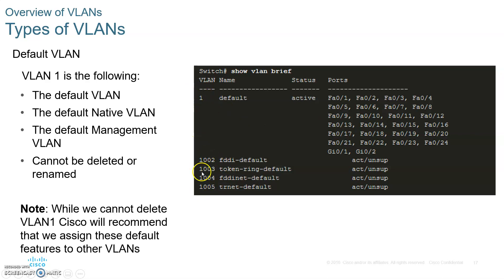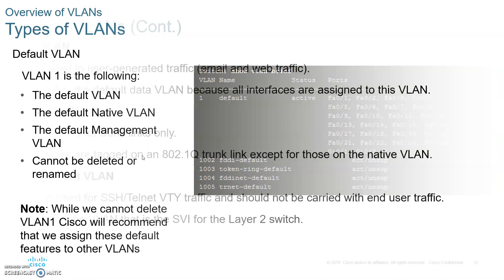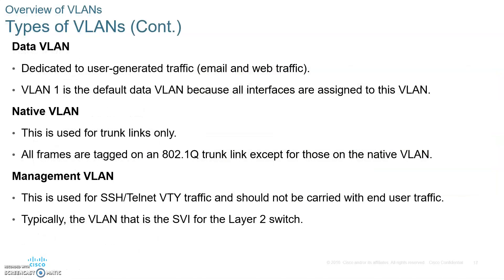There are an additional four VLANs created by default, but we'll never use these — they are legacy. So if asked how many VLANs are created by default, the answer is five. You can see these by typing 'show vlan' or 'show vlan brief.' The data VLAN is dedicated to user traffic only, and VLAN 1 is set up by default to be the data VLAN.